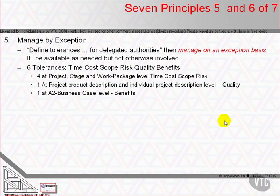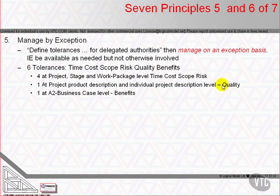Delegation of authority from one management level must set limits, both plus and minus, on the allowable variation in completion date, resource usage, conformance to specification, inclusion of required elements, degree of risk, and ability to deliver benefits. Of the six tolerances, four of them — time, cost, scope, and risk — are managed at project, stage, and work package level. Quality is applied at the level of the project's overall result, and each work package includes individual product descriptions. Benefits tolerance is managed at project level through updating of the business case and the project board's reassessment of the benefits to be received.